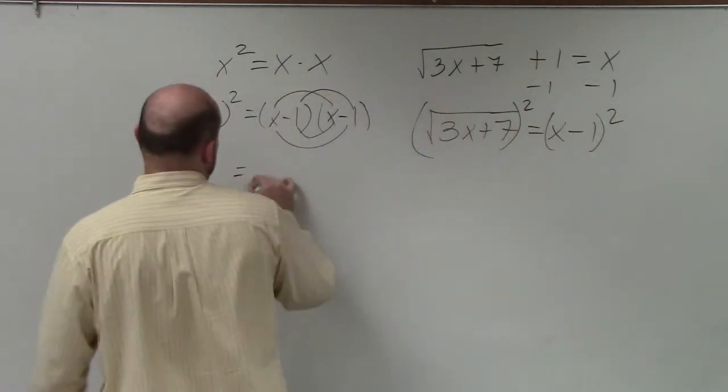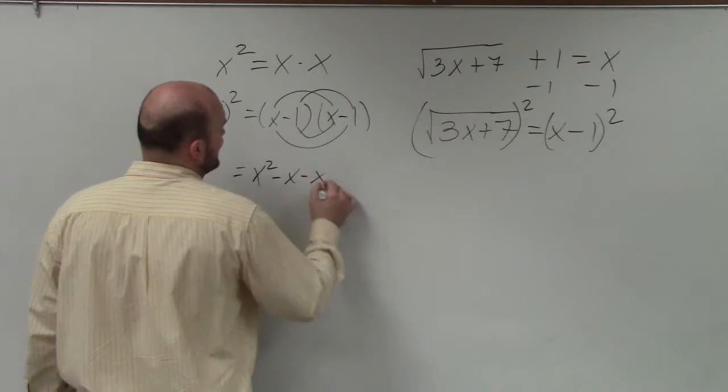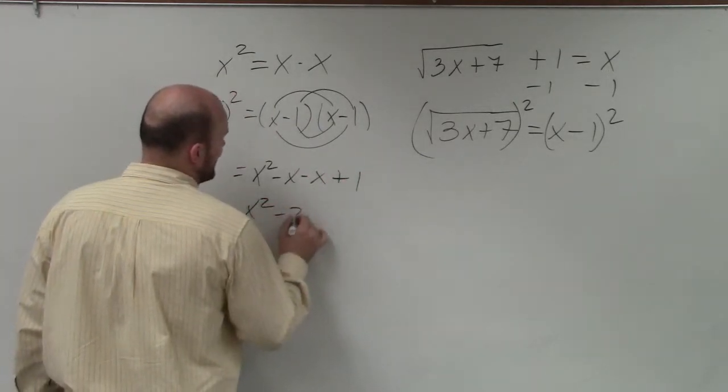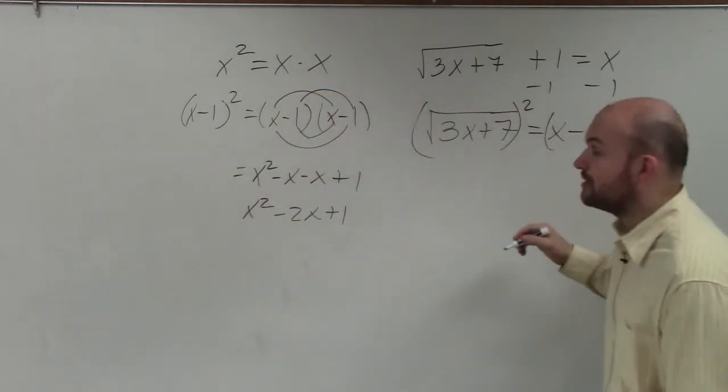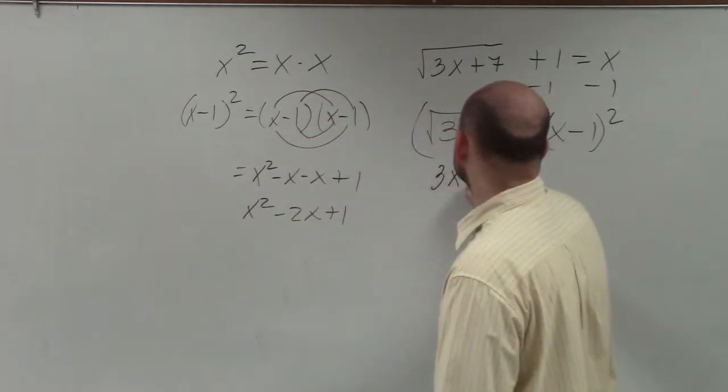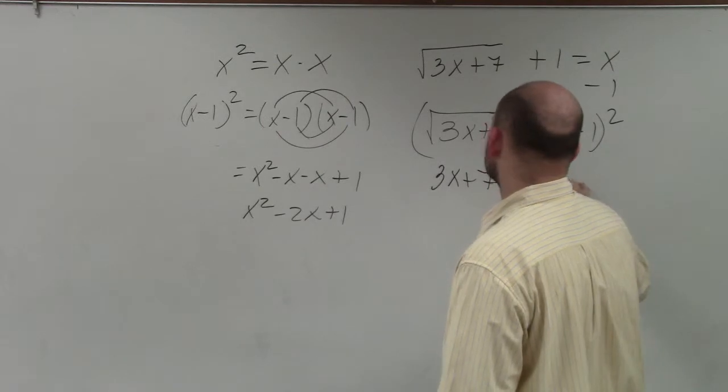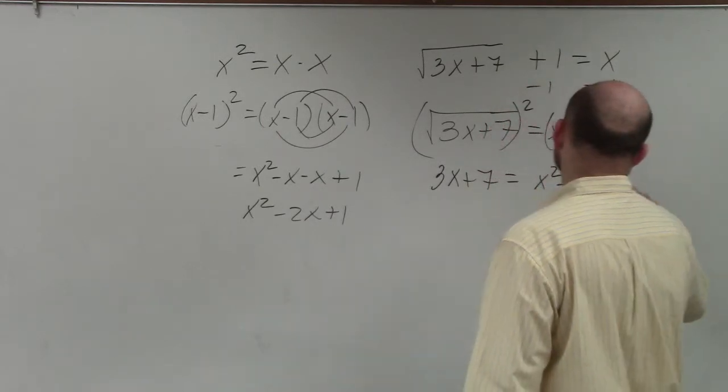So therefore, this becomes x squared minus x minus x plus 1, which is x squared minus 2x plus 1. So therefore, the square root and the squaring cancel out. So I'm left with 3x plus 7 equals x squared minus 2x plus 1.